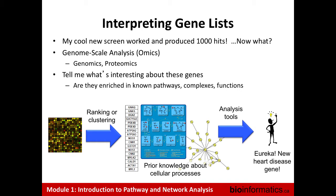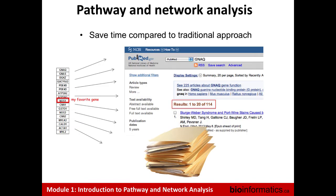One way that people have found incredibly useful for interpreting large-scale data is pathway analysis and network analysis. If you ask what's interesting about these genes, you can ask whether they are enriched in some type of pathway. For example, if all the genes you found are mostly related to the cell cycle, that's much more interpretable and easy to understand. Without an analysis tool, you'd have to go through those genes one by one, looking at the literature and putting all the pieces together yourself.